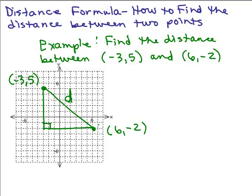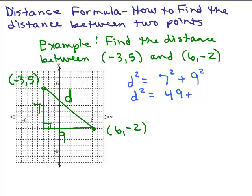How long are each of these sides? I've got 7 spaces along the vertical direction, and along the x-axis in the horizontal direction I've got 3 plus an extra 6 — 9 spaces. So using the Pythagorean Theorem, d squared equals 7 squared plus 9 squared. That means d squared equals 49 plus 81, so d squared equals 130.